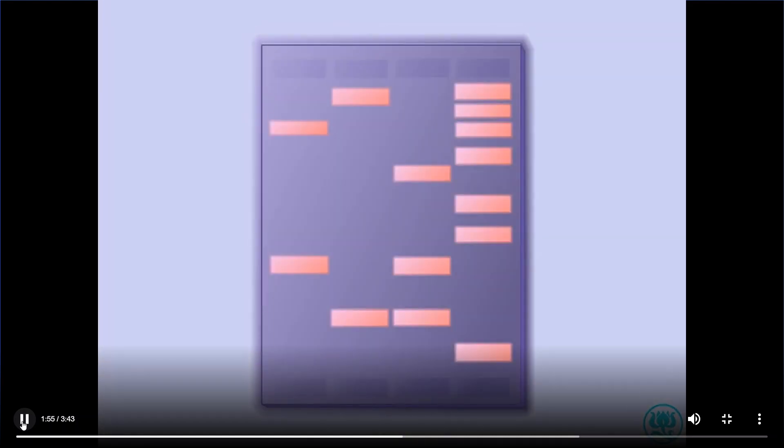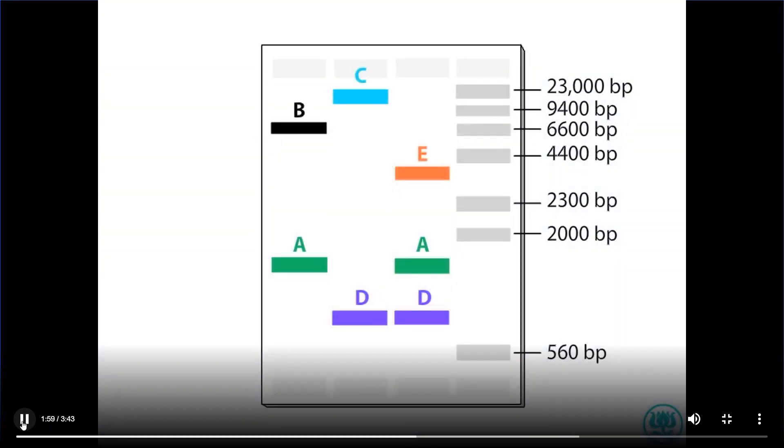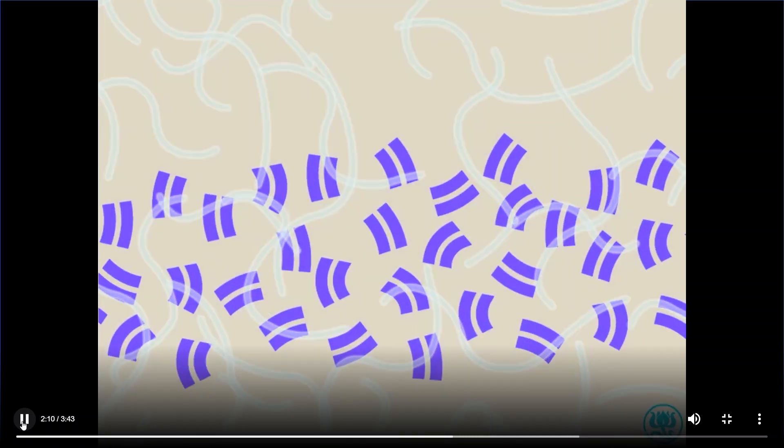A DNA fragment in the size standards lane is the smallest, in this case about 500 base pairs, followed by DNA fragment D. The largest fragment is 23,000 base pairs long. Each band of DNA may contain millions of fragments of the same size.